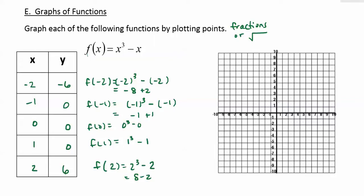So plotting these points gives us a point at negative 2, negative 6. You go left 2 and down 6. Then we have a point at negative 1, 0, at 0, 0, at 1, 0, and at 2, 6.